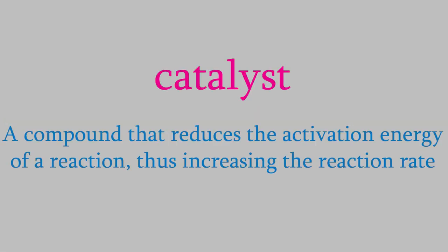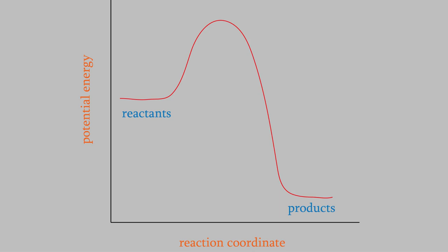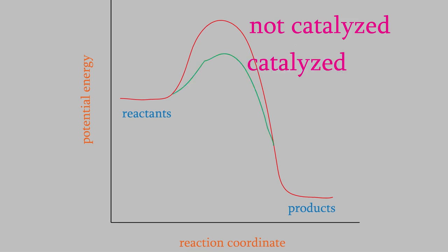A catalyst is a chemical that can reduce the activation energy of a reaction. So, for example, here's a typical reaction without a catalyst. If we add a catalyst to it, the activation energy decreases, so it might look like this. That means that the reactants will no longer need as much energy to get over the barrier, and that will make the reaction faster.